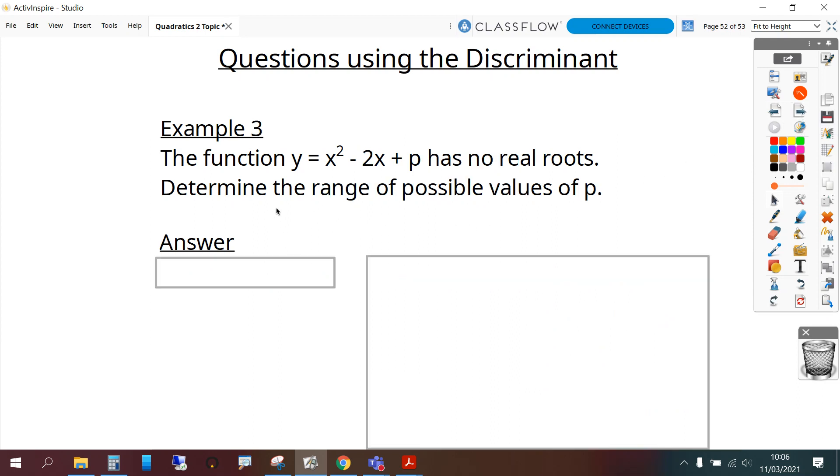Final example. The function y equals x squared minus 2x plus p has no real roots. Determine the range of possible values of p. Starting again with a, b and c. a is 1, b is negative 2 and c is p. We're told it's got no real roots.